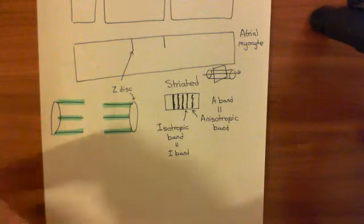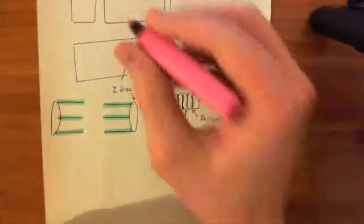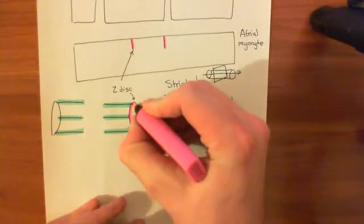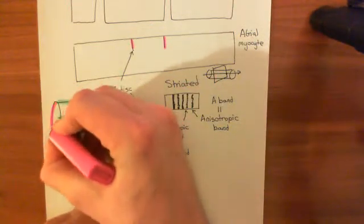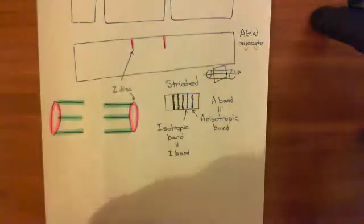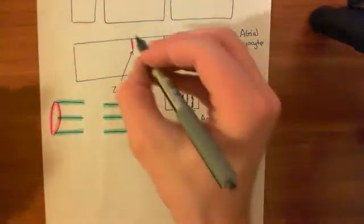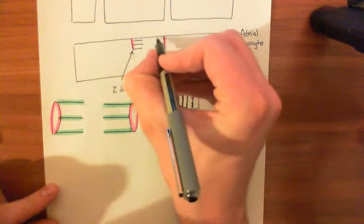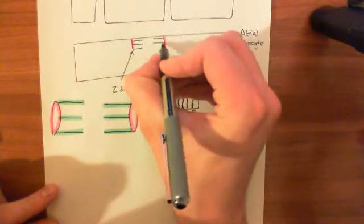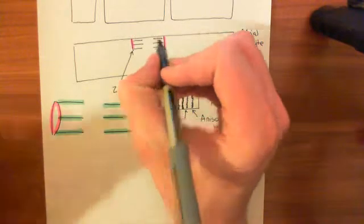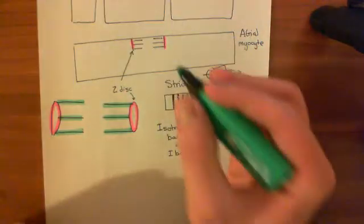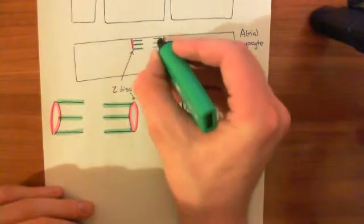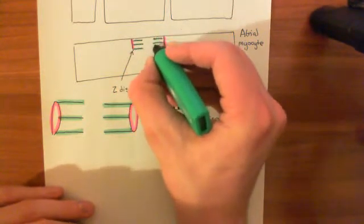So far we've discussed these Z-discs, which I'm going to draw in purple. So these are these structures here, and we've discussed that the Z-discs have these actin filaments attached to them. Here come the actin filaments on this little picture. I'm drawing three to make the picture as simple as possible, but you'll have far more than that in reality.